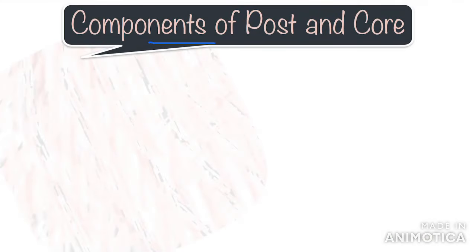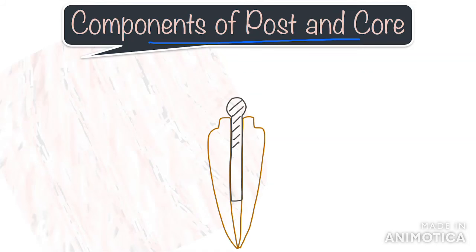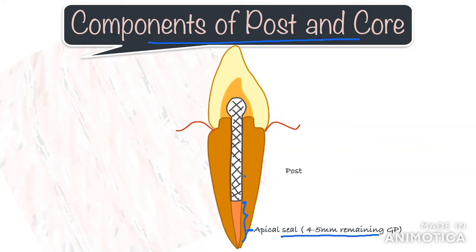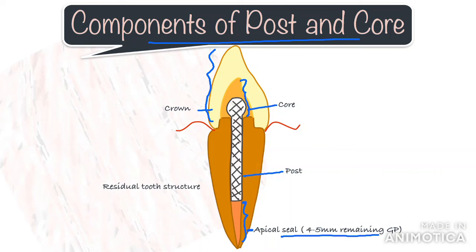Coming to the components of a post and core system, we need to familiarize with these terms early on so that the rest of the presentation is easy to understand. A fully restored tooth with a post and core has five parts. The first part is the 4-5 mm of the apical seal which is left after the post space is created. Then we have the post which is located into the root portion. This post retains the core which replaces the missing coronal structure of the tooth, and the core retains the crown or the final restoration. And finally, we have the remaining or the residual coronal and the radicular tooth structure which supports the post and core restoration.